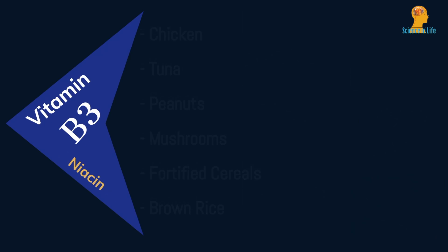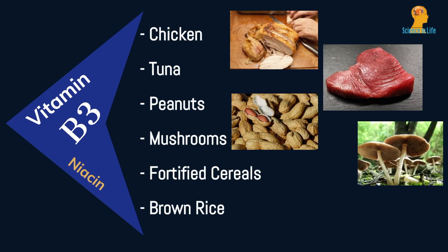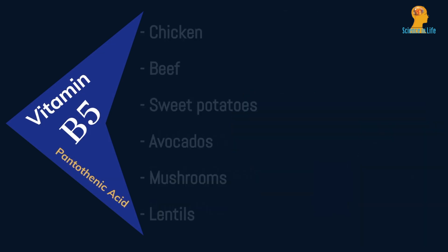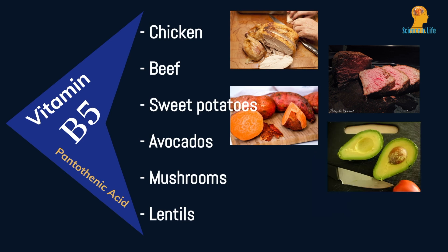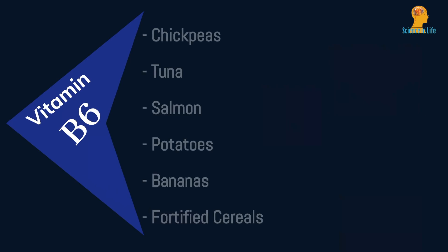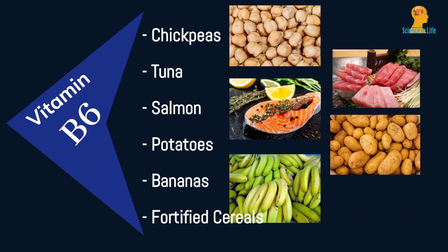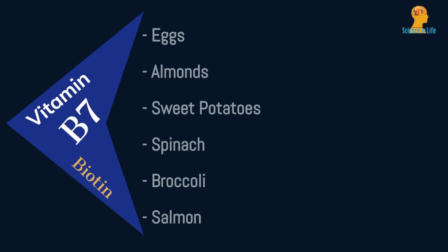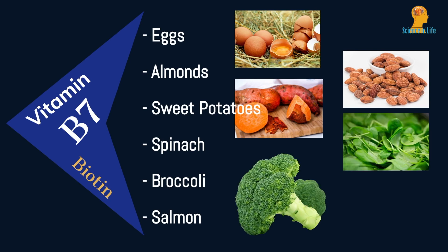Vitamin B2: milk, yogurt, cheese, fortified cereals, almonds, and spinach. Vitamin B3: chicken, tuna, peanuts, mushrooms, and brown rice. Vitamin B5: chicken, beef, sweet potatoes, avocados, mushrooms, and lentils. Vitamin B6: chickpeas, tuna, salmon, potatoes, bananas, and fortified cereals. Vitamin B7: eggs, almonds, sweet potatoes, spinach, broccoli, and salmon.